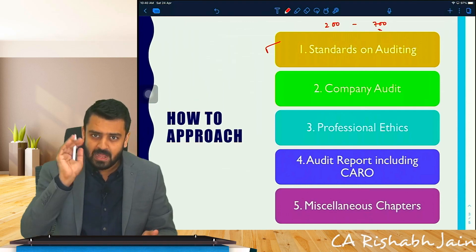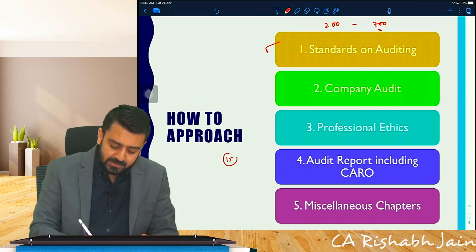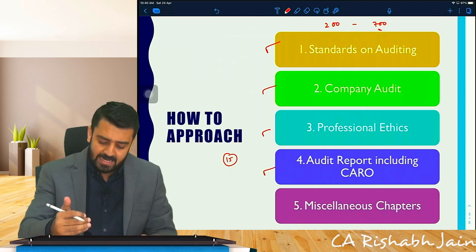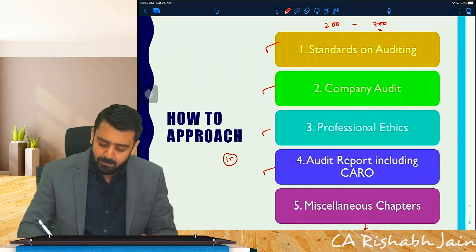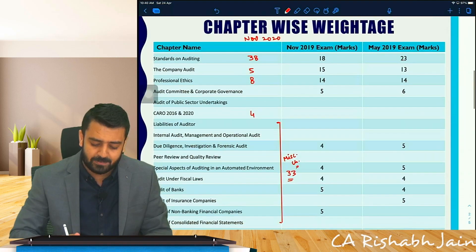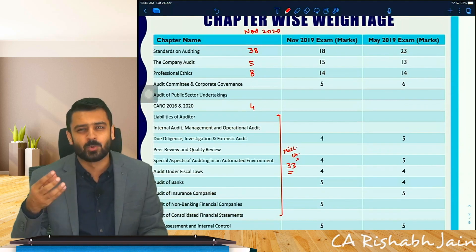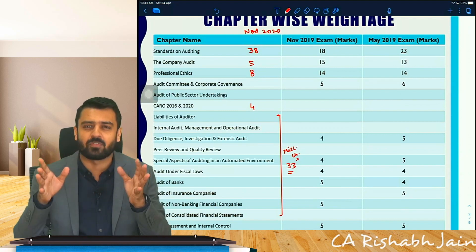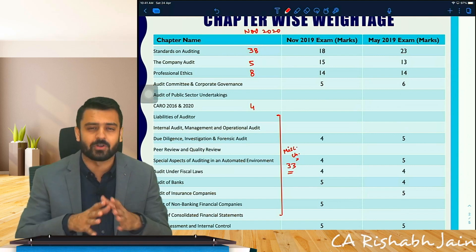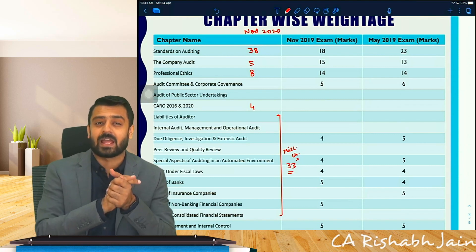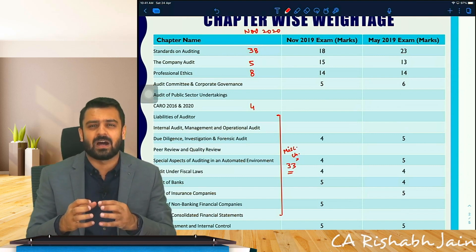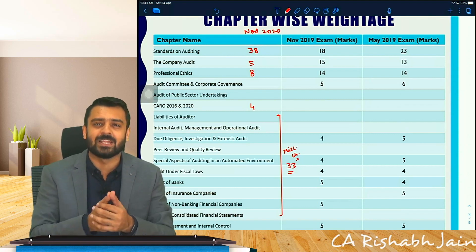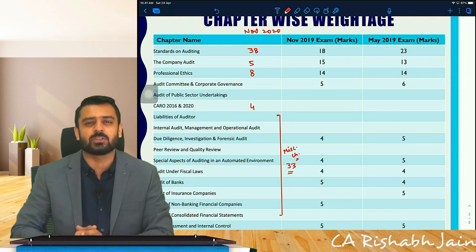So auditing standards 200 to 700 are covered. Other than auditing standards, you have 15 chapters. Out of those 15, company audit, professional ethics, and CARO are three again-important chapters. Other than these three, we are left with 12 miscellaneous chapters — bank audit, insurance audit, due diligence, investigation and forensic audit, audit of NBFCs, and various other entity types. My complaint with ICAI is that these miscellaneous chapters are so detailed and so theoretical that the practical aspect is missing, and unfortunately their weightage is still significant.